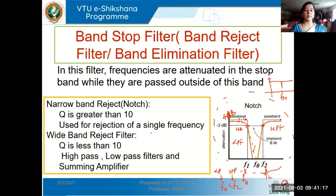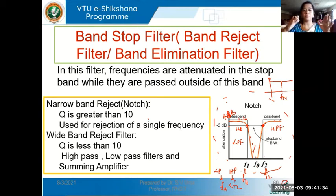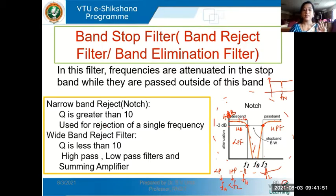Notch filters are used for rejection of a single frequency, like the power supply noise or hum. The AC power supply works on 50 Hz, which creates noise or hum for all communications. If we want to avoid that, we use a simple band reject filter to reject that 50 Hz frequency. A single frequency can be rejected if the Q factor is sufficiently high — the narrower the bandwidth, the higher the Q factor. Wide band reject filters have Q less than 10 and use a high pass filter, low pass filter, with their responses added using a summing amplifier.